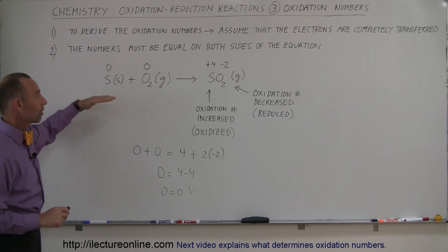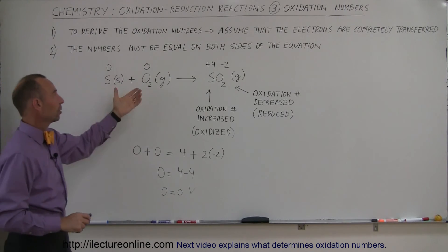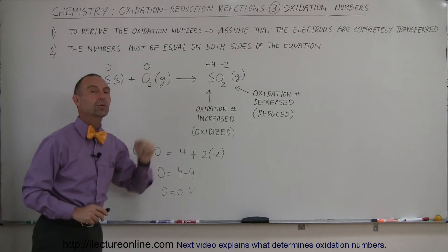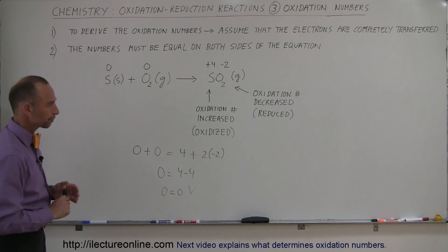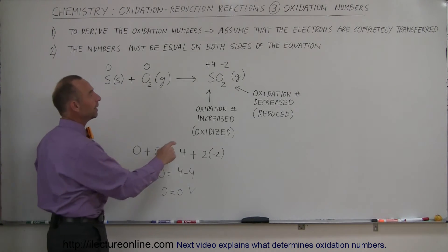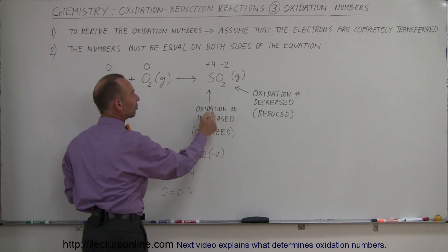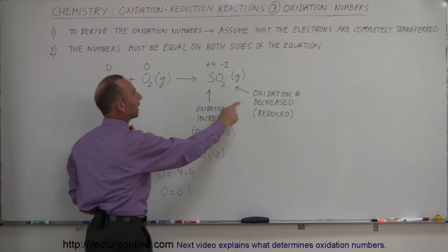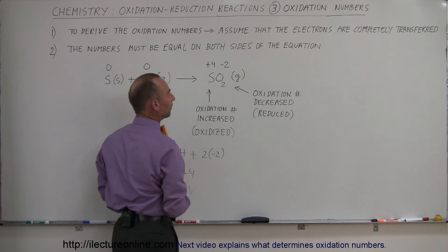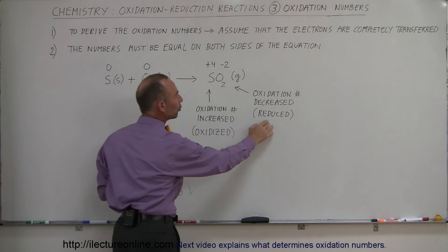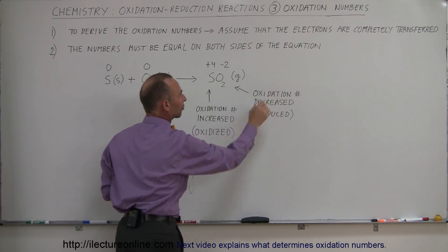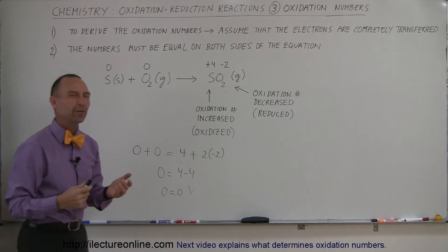We want to make sure that the equation is correct if the oxidation numbers add up on the left side and they're equal to what they add up on the right side. Another thing to keep in mind: sulfur is the atom that is being oxidized - the oxidation number increases. Oxygen is the atom that's being reduced, and therefore the oxidation number decreases. That's how you keep track of the two.